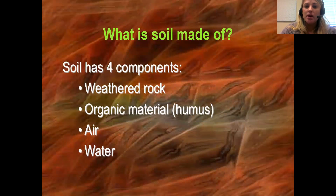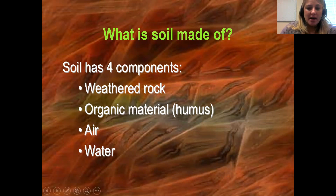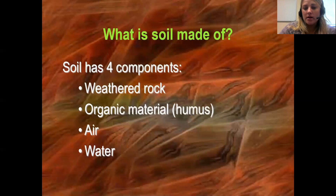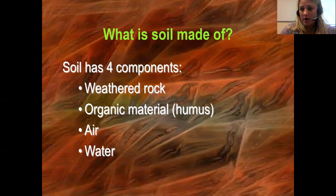So what is soil made of? It has four main components: weathered rock, whether chemically or mechanically weathered; organic matter called humus, which can come from dead plants and dead organisms; and decomposers like bacteria and fungus are responsible for breaking down that organic matter so it becomes part of the soil.